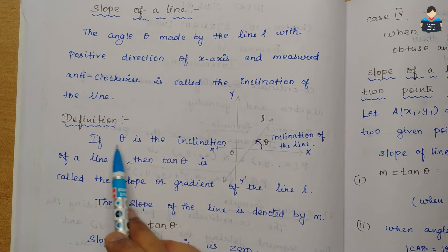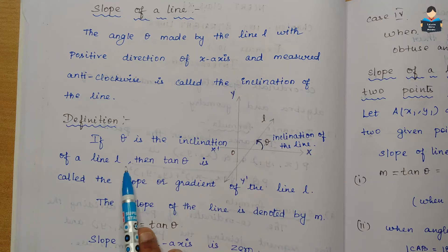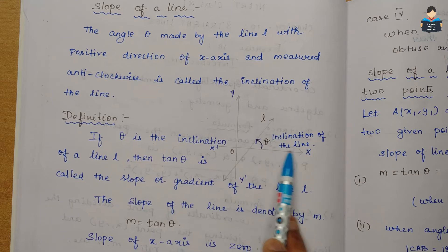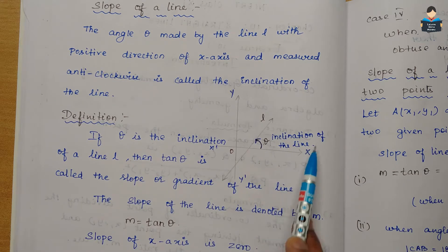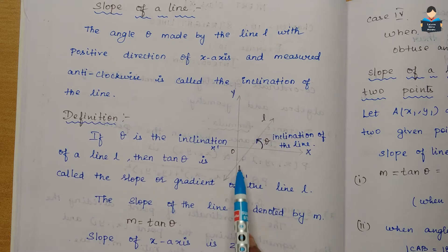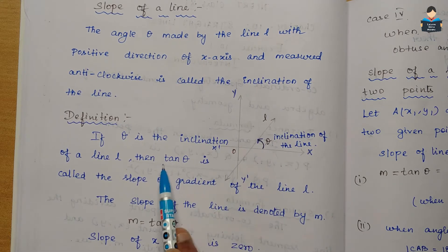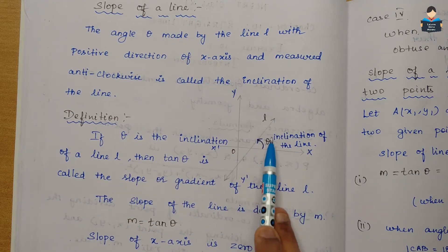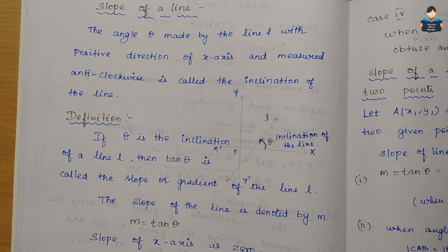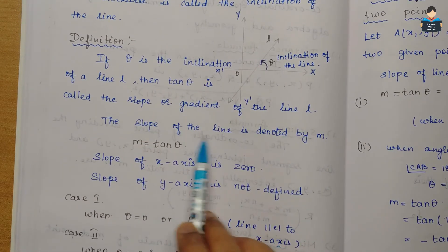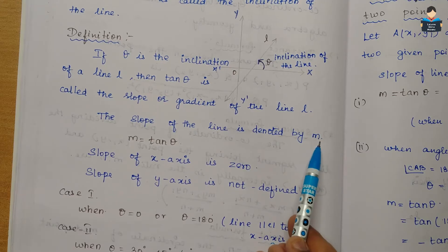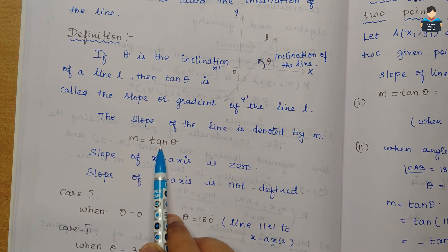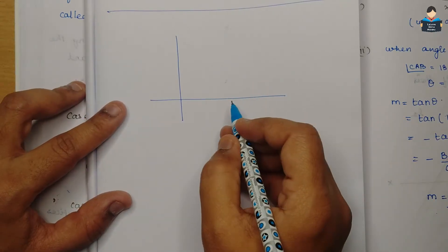The proper definition: if theta is the inclination of line L, then tan theta is called the slope or gradient of the line L. We denote slope by M, so M equals tan theta.